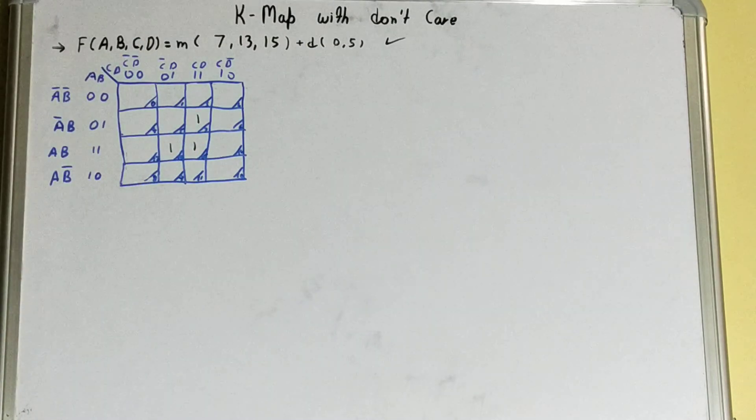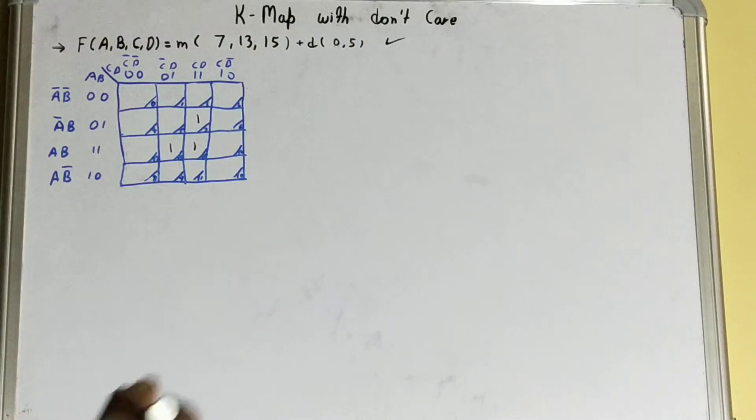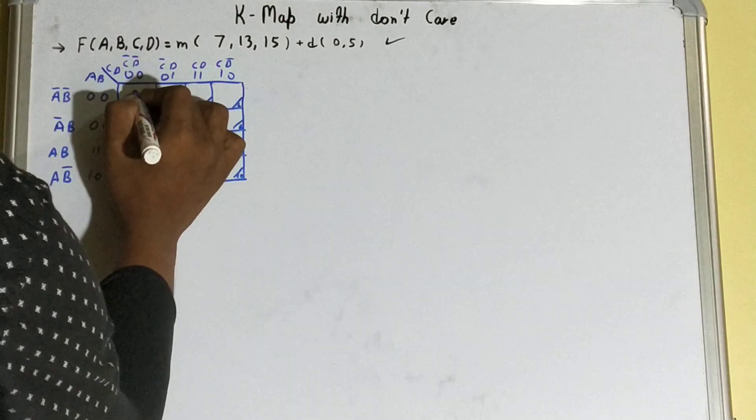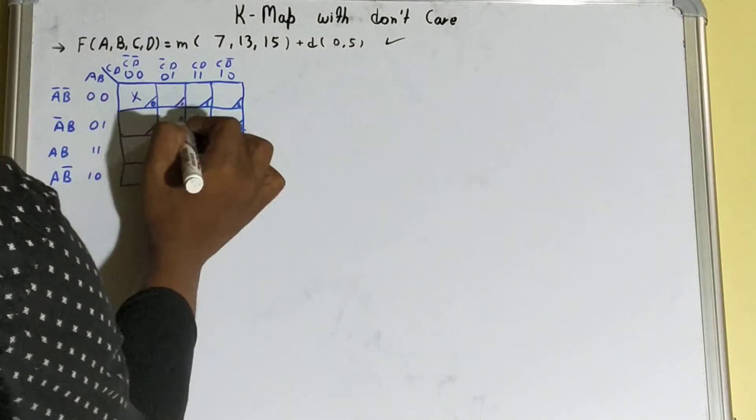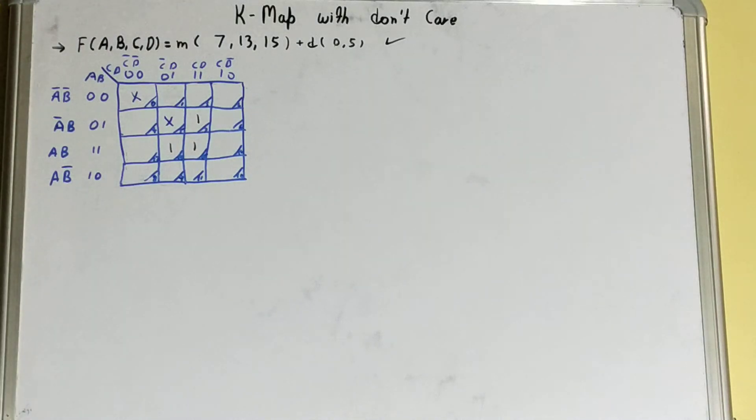But here, don't care condition changes things. So let's plot this don't care as well. The don't care will be plotted at 0 and it will be marked as X, and at 5 also.